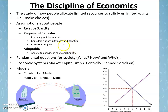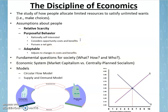Another assumption we make is that people pursue a net gain. This stems from benefits exceeding costs. If you chose the econ degree and gave up the psychology degree, you're saying the benefits of an econ degree are greater than the costs — the foregone psychology degree — so you saw a net gain. We also assume that people are adaptable: they will change based on costs and benefits, being incentivized to make changes when circumstances change.